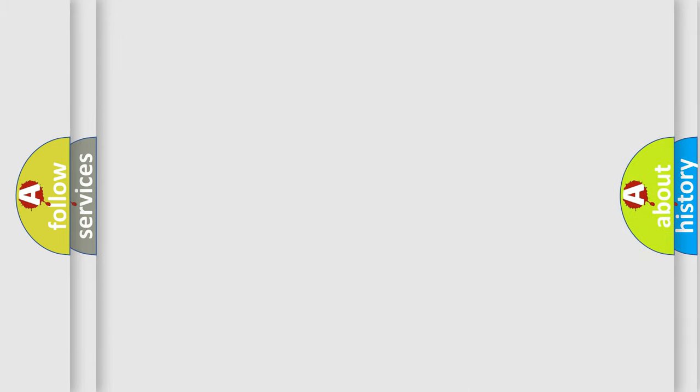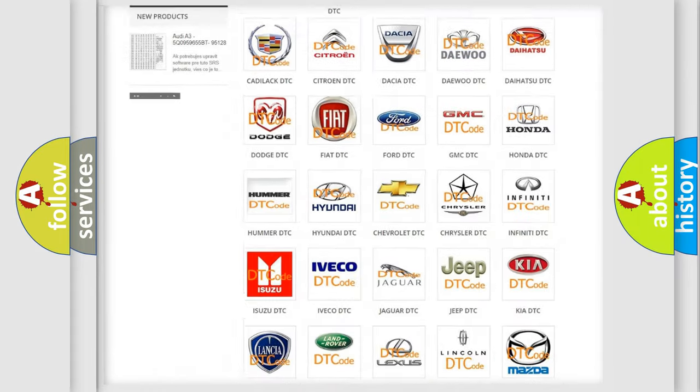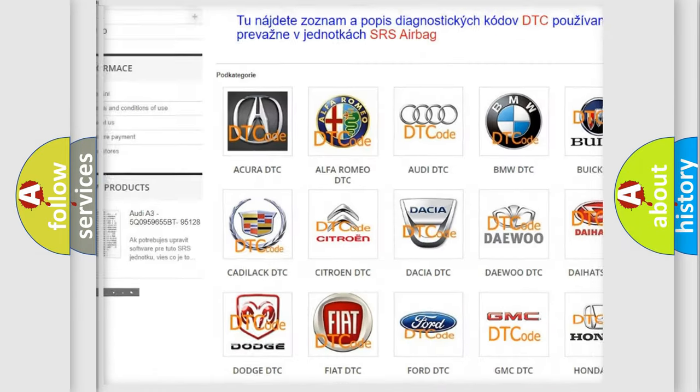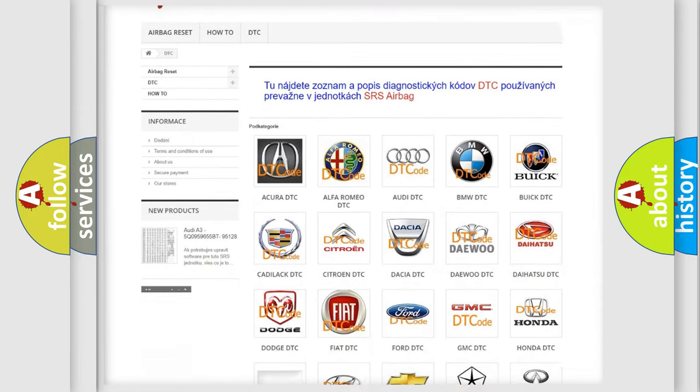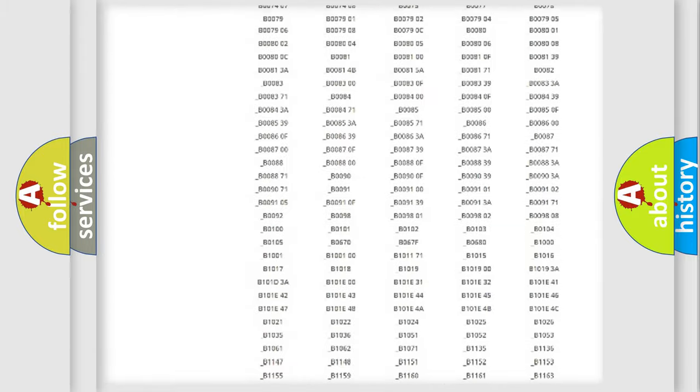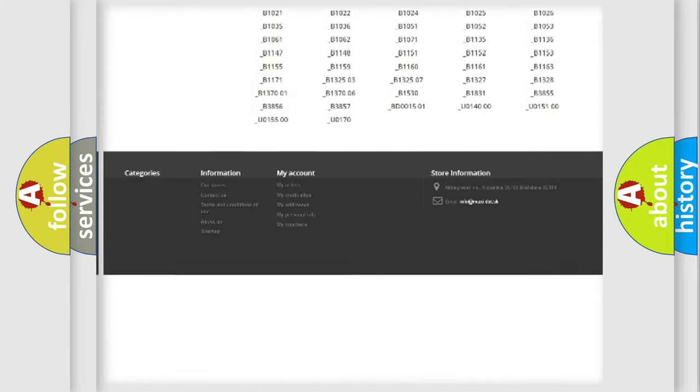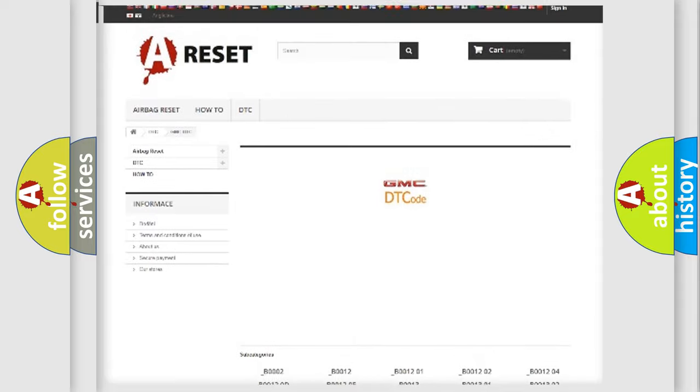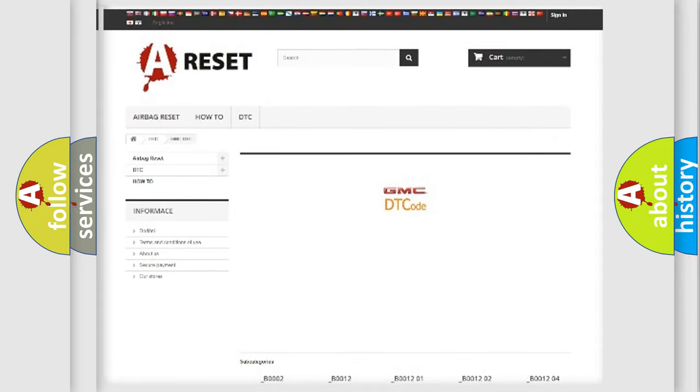Our website airbagreset.sk produces useful videos for you. You do not have to go through the OBD2 protocol anymore to know how to troubleshoot any car breakdown. You will find all the diagnostic codes that can be diagnosed in GMC vehicles, and many other useful things.